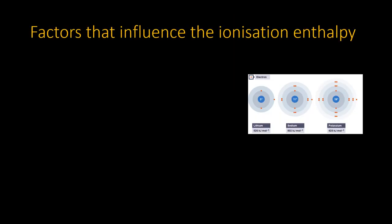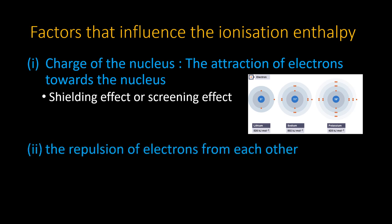Everything is dependent on two important factors. One is the charge of the nucleus. The other is the repulsion of electrons from each other. Atomic size also comes under this category. So I am classifying the factors into two parts: the charge of the nucleus, and the repulsion of electrons from each other.